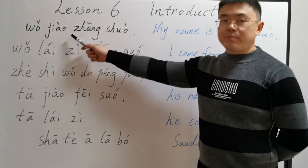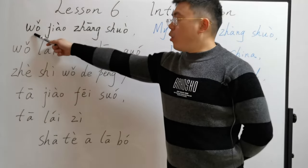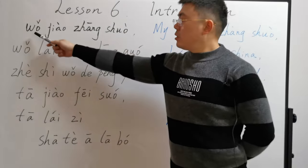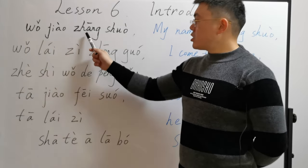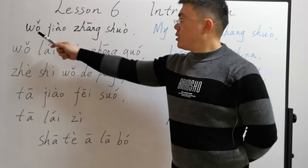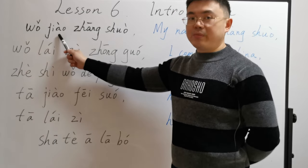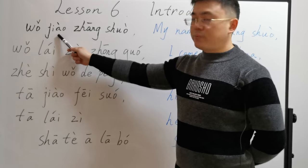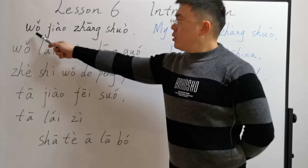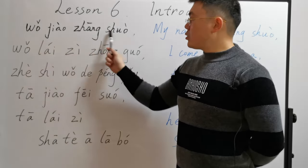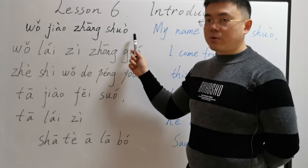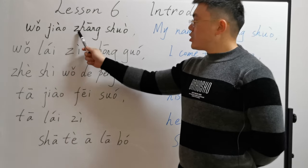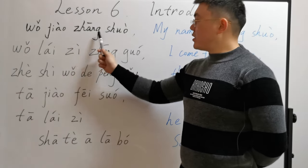The first one, please read after me: 我叫张朱. We have already learned these sentence patterns in previous lessons. 我 means I, 叫 means call. 我叫张朱 means you can call me 张朱, or my name is 张朱.